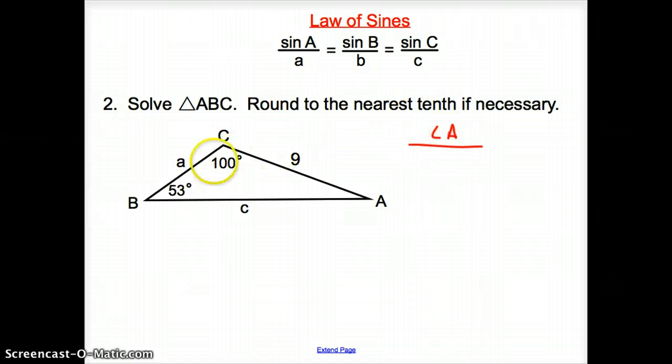Well, we know that the whole triangle adds up to 180 degrees. So, if I take these away, I will be given angle A. So, I am going to go 180 minus 100 minus 53. That is going to give us 27 degrees. So, angle A is 27 degrees.